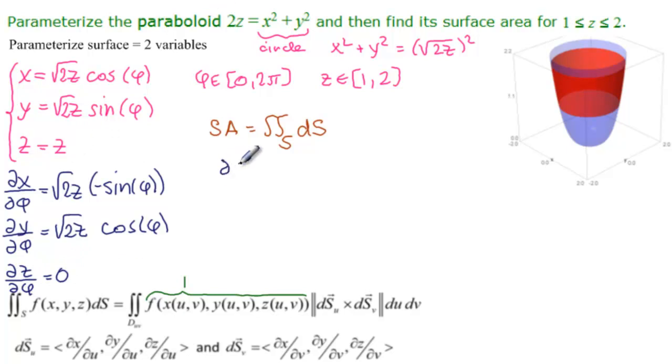Delta x delta z. So now we're taking the derivative of that square root. So 1 over 2 times the square root of 2z times the derivative of what's inside, 2. And then this is constant, cosine of phi. So the 2s cancel. And we have 1 over the square root of 2z cosine of phi.